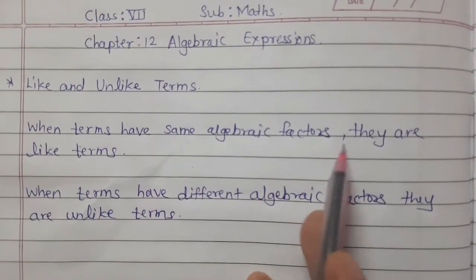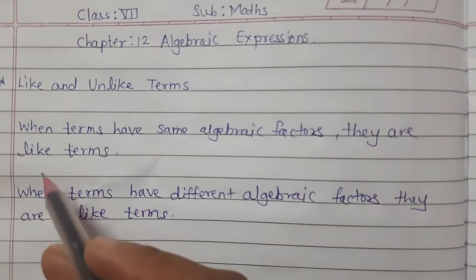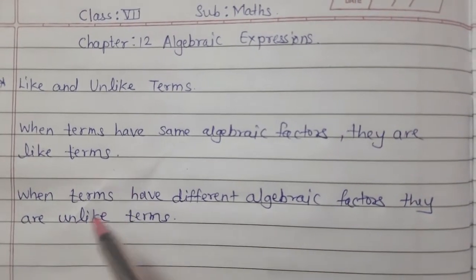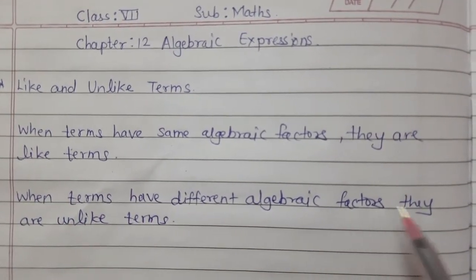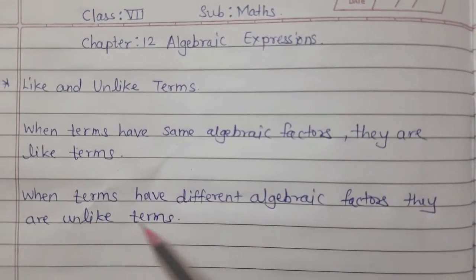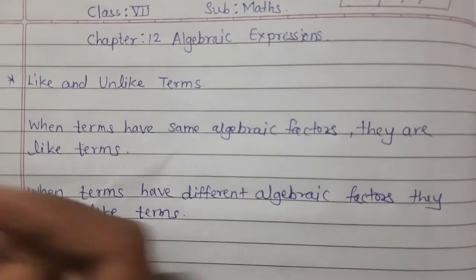When terms have same algebraic factors, they are like terms. And when terms have different algebraic factors, they are unlike terms.